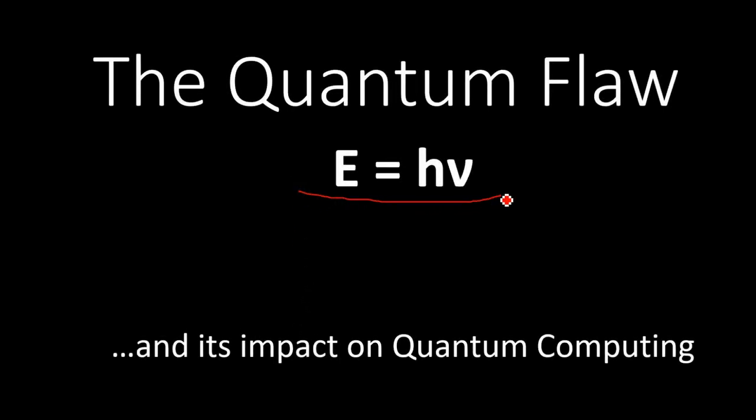This equation is the foundation of quantum theory, but it has a mathematical flaw that's actually pretty easy to understand. This flaw has a very large effect on quantum mechanics, which is currently being used to engineer quantum computers.